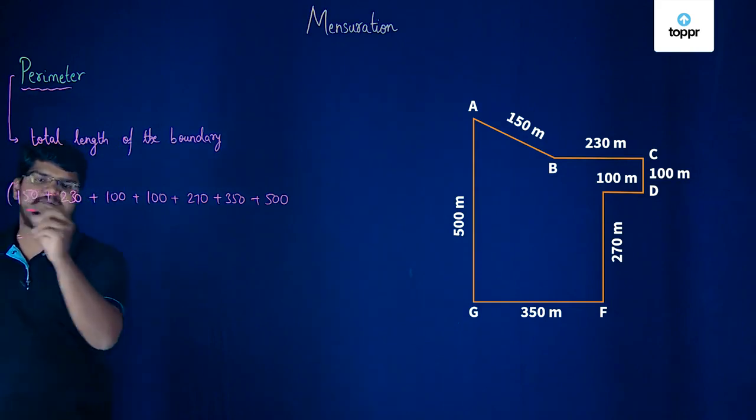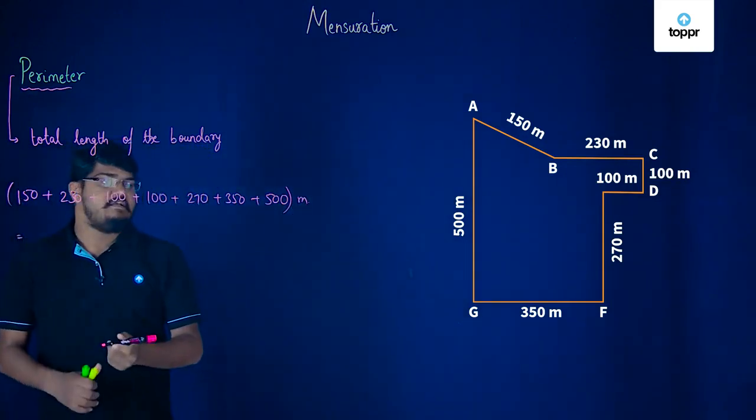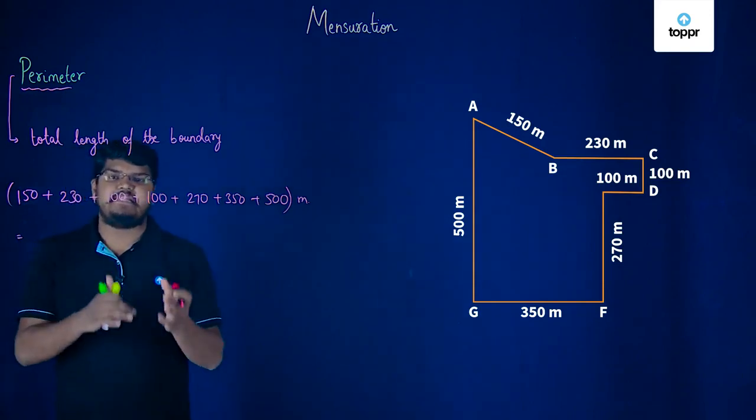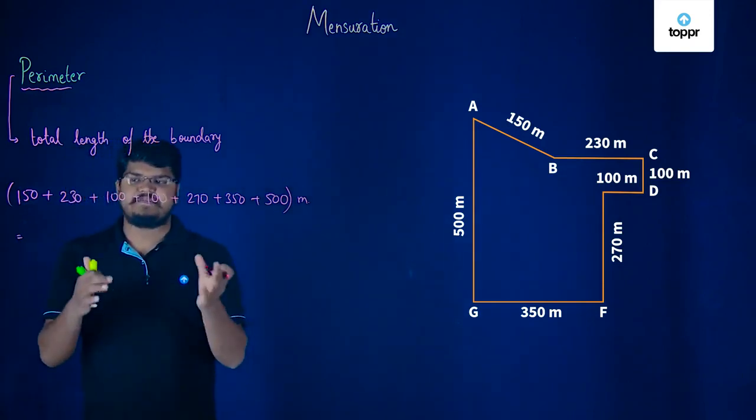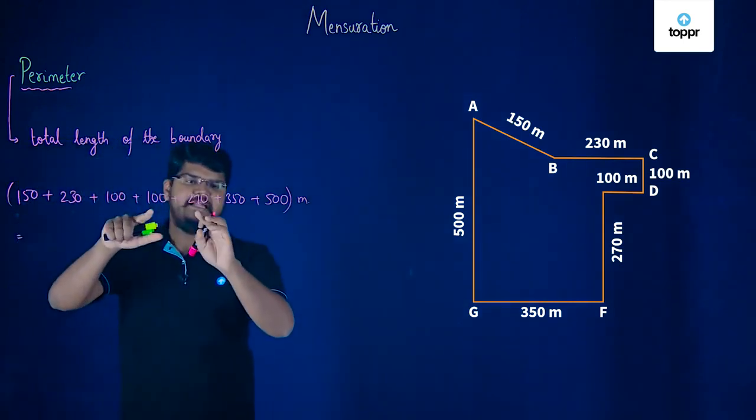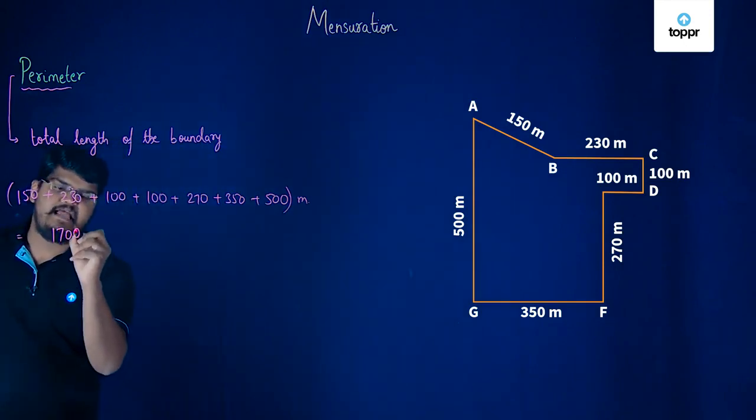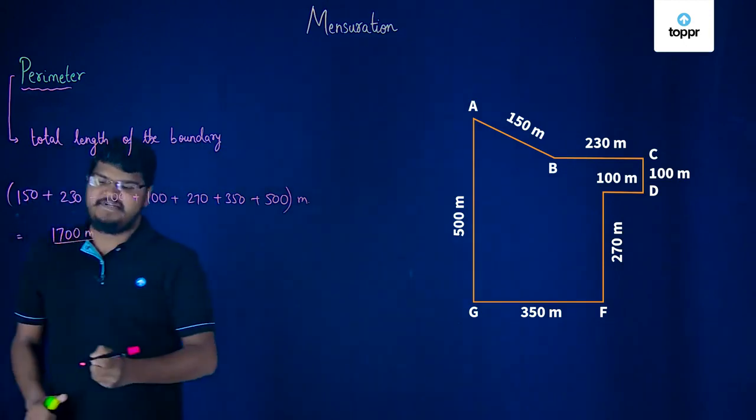Now, all these values are in meters, so outside this particular bracket, I'll write meters. So, let us now add and find the perimeter or actually the distance which I'd run for. So, 150 plus 230 gives us 380, then 480, 580, 850, 1200 and 1700. So, basically I had run 1700 meter.